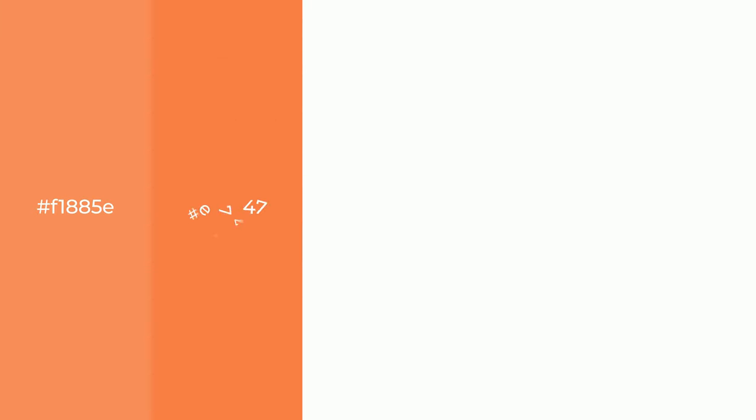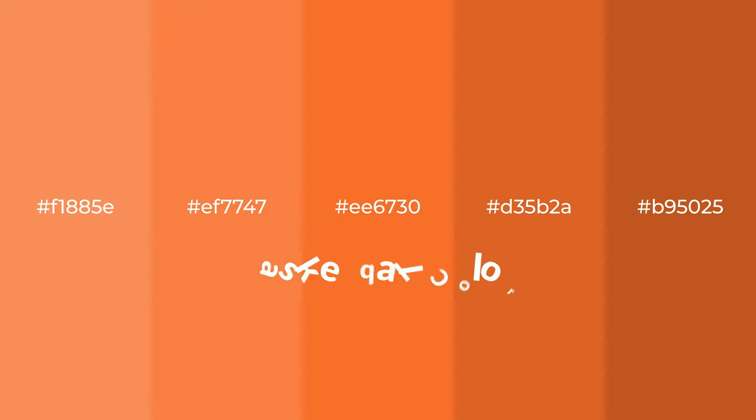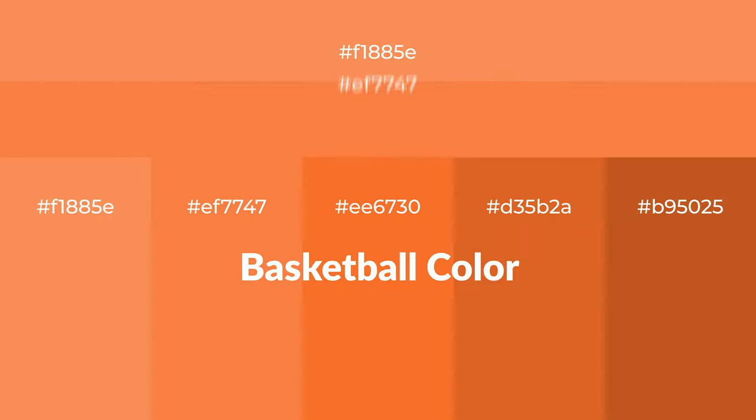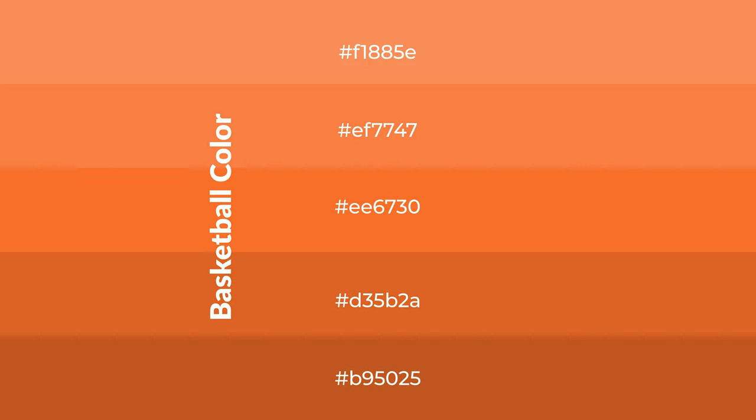Warm shades of basketball color with orange hue for your next project. To generate tints of a color, we add white to the color. Tints create light and exquisite emotions. To generate shades of a color, we add black to the color.